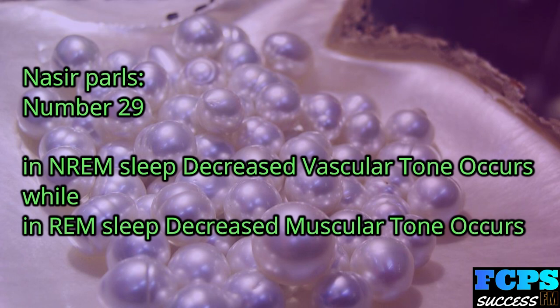Nasir Pearl number 29: In NREM sleep, decreased vascular tone occurs. In REM sleep, decreased muscular tone occurs.